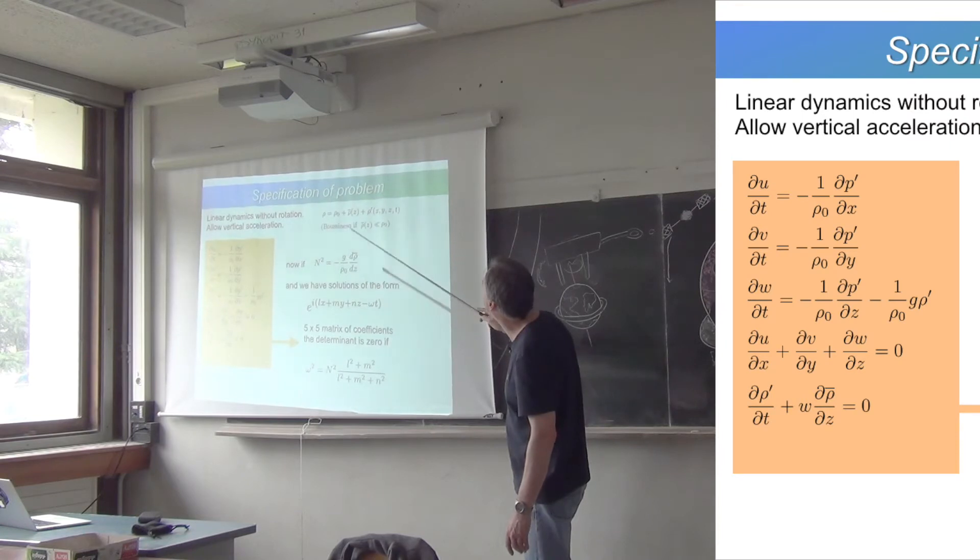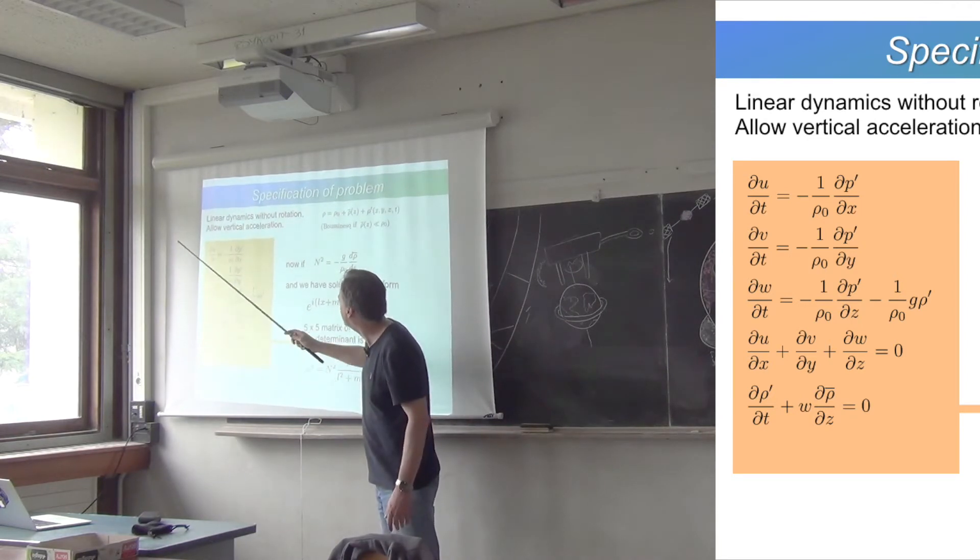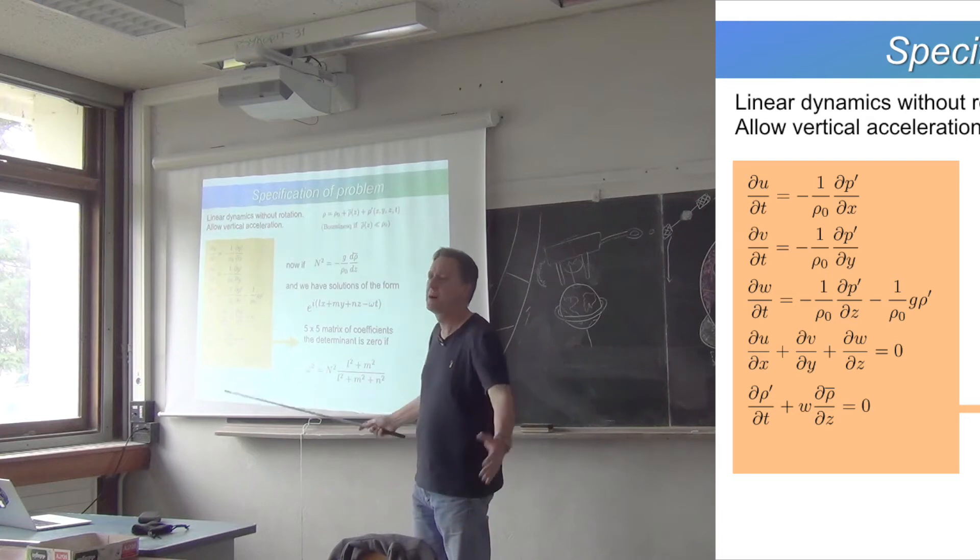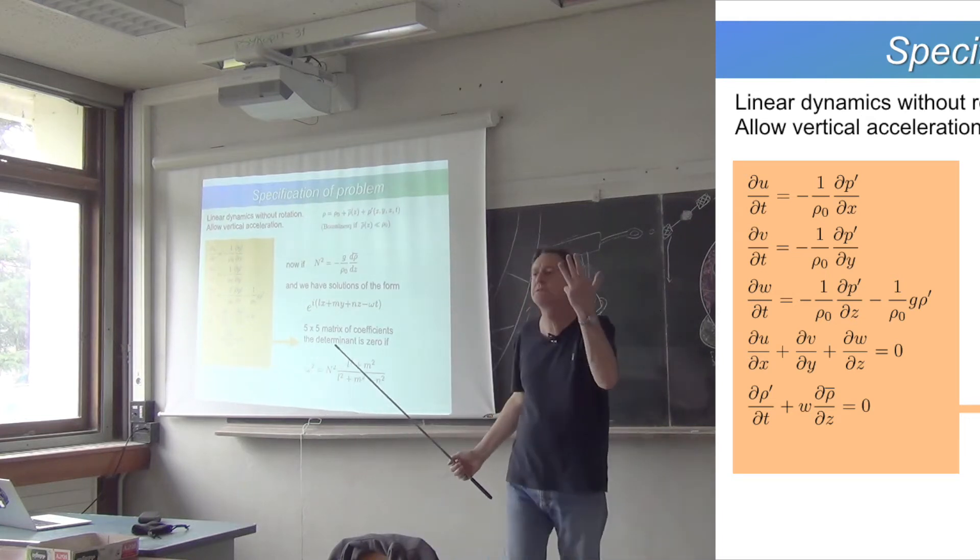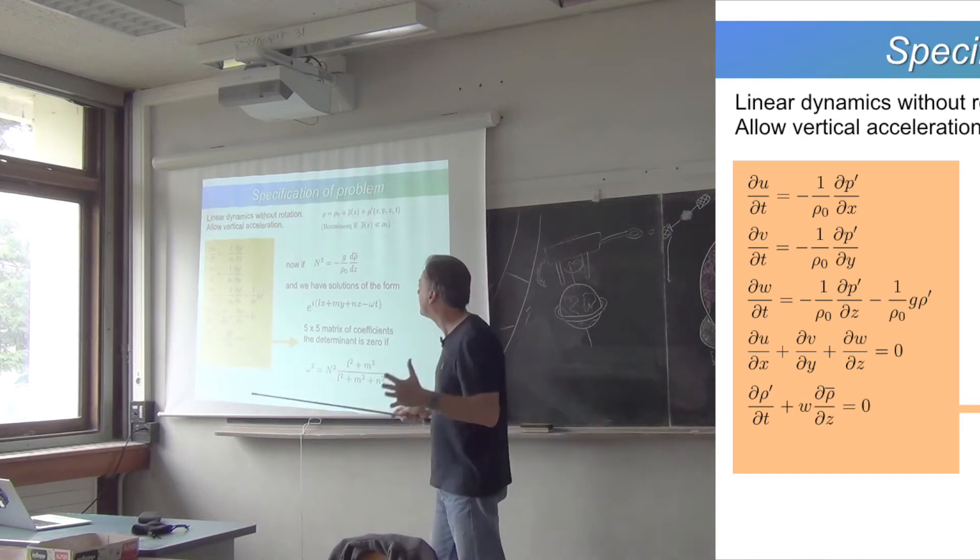And we're looking for solutions for the perturbations, ρ prime and the other variables u, v, and w, and pressure. So, we've got five unknowns, well, five variables, the three components of the velocity, the pressure, and the density. And we've got five equations.